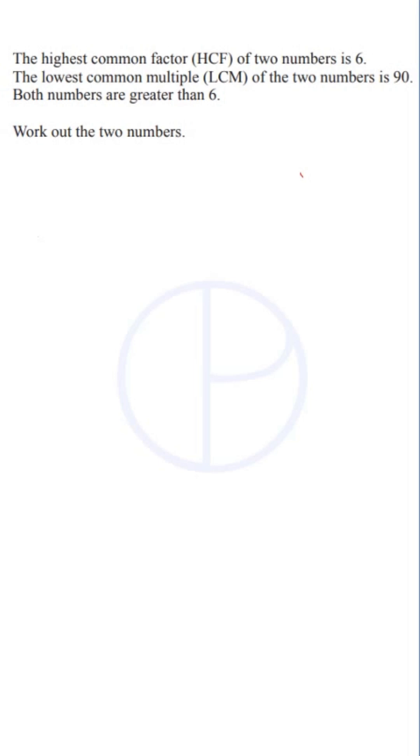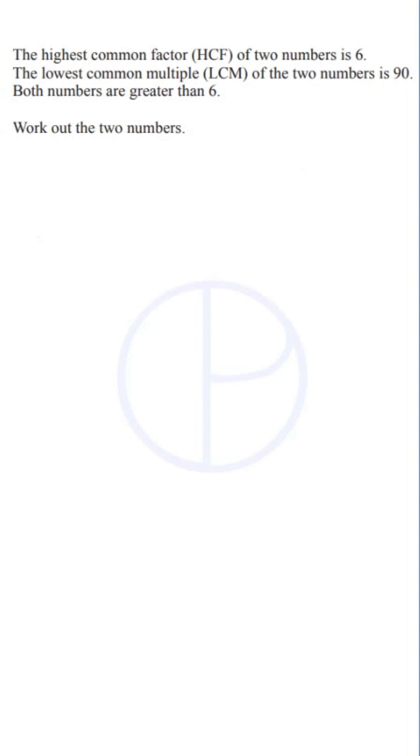The highest common factor of two numbers is 6 and the lowest common multiple of two numbers is 90, but both numbers are greater than 6. So LCM is 90 and HCF is 6. Let's write these as a product of its prime factors.